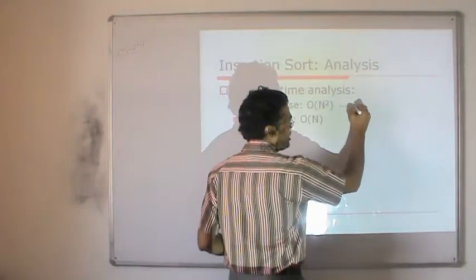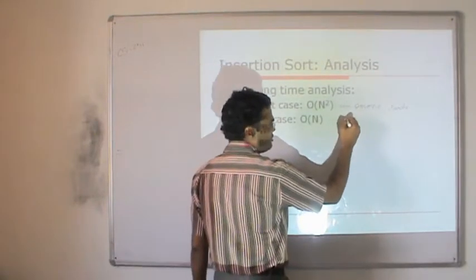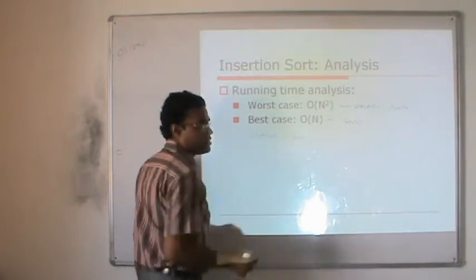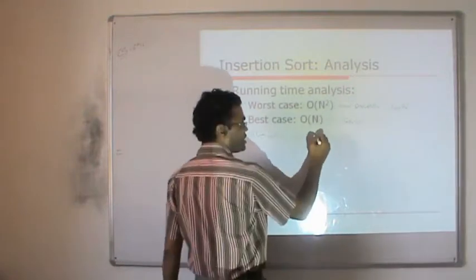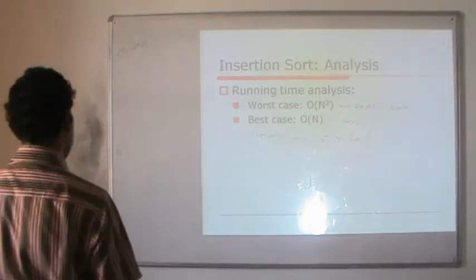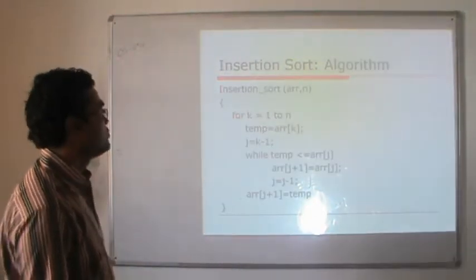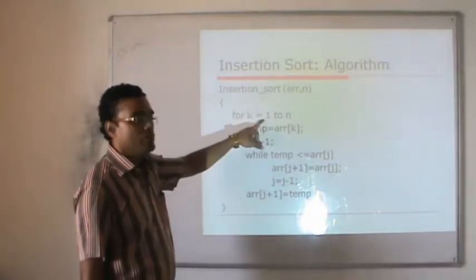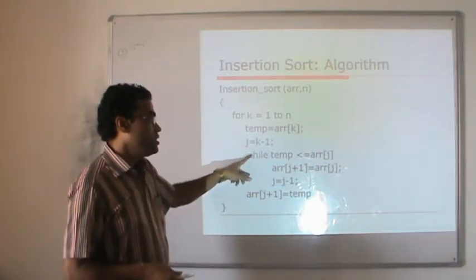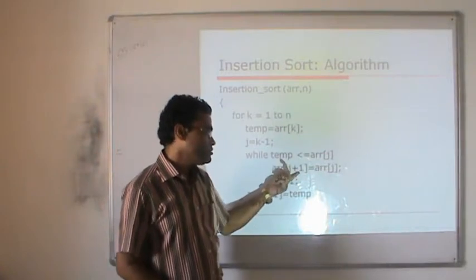The worst case for insertion sort occurs when elements are reverse sorted; the best case is when already sorted. The algorithm for insertion sort starts from index 1 (assuming index 0 is already sorted), finds the element, and if it is less than its predecessor, shifts elements forward one position, setting a[j+1] = a[j], until the correct position is found.